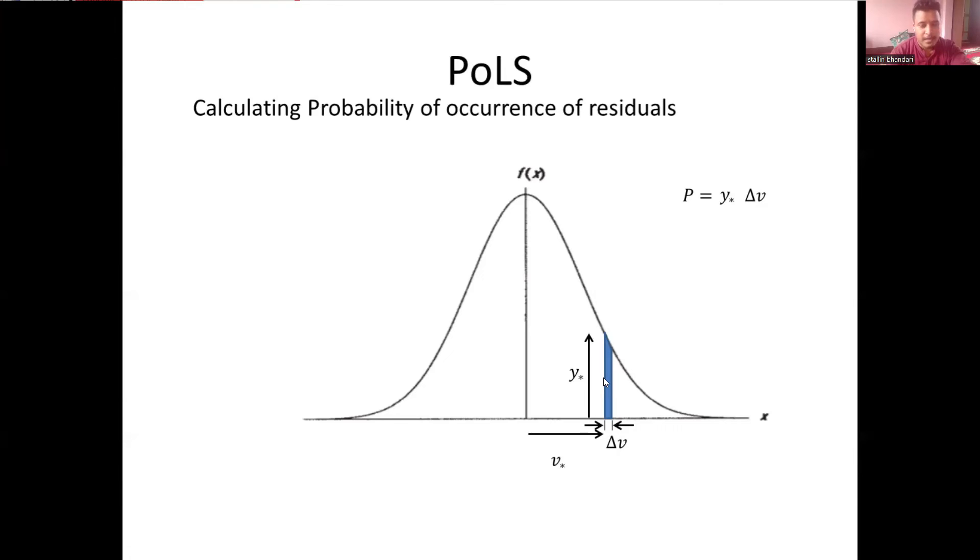Where del v is the very small increment in v, and the area inside this figure, the area inside this trapezoid type of figure, this gives the probability of occurrence of the residual v*.